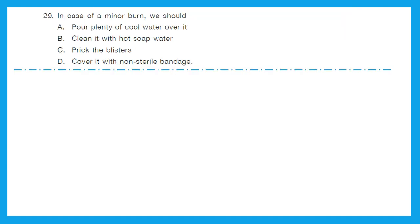Question 29: In case of a minor burn, we should pour plenty of cool water over it — so we already have our answer, option A. The other options we should not do: clean it with hot soapy water — no. Prick the blisters — no. Cover it with a non-sterile bandage — not at all. Option A is the right answer.